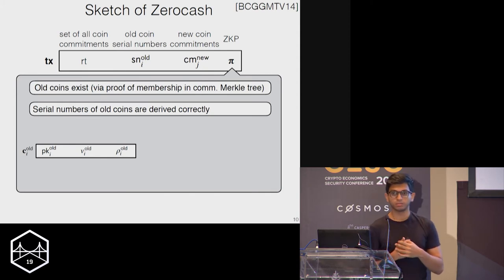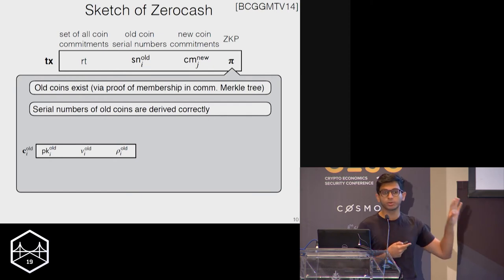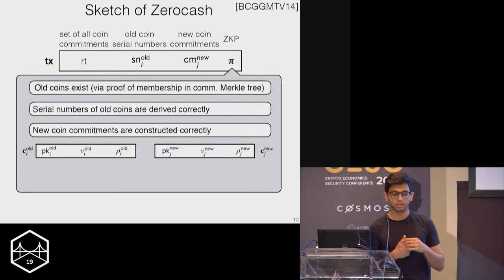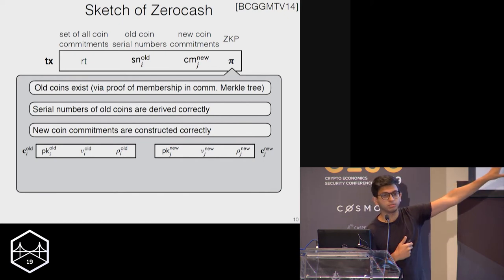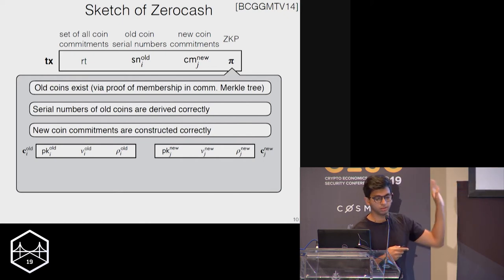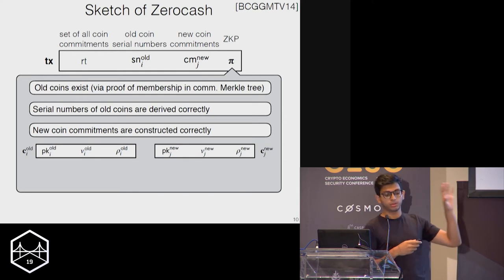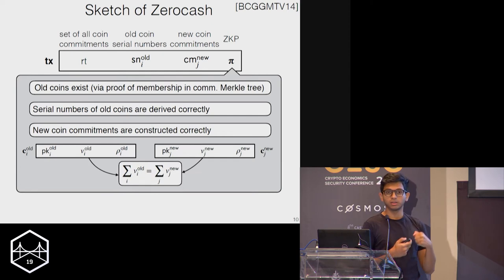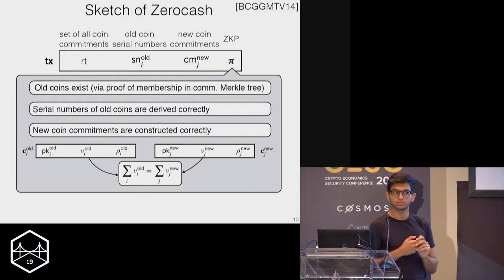The proof asserts that the serial numbers for the coins being spent are derived correctly — if you can make up serial numbers arbitrarily, you could double spend because they'd never be duplicated. It also asserts that new coin commitments are constructed correctly, corresponding to some public key, some value, and other data. And finally, the proof asserts that input value equals output value — we're not making money out of thin air.